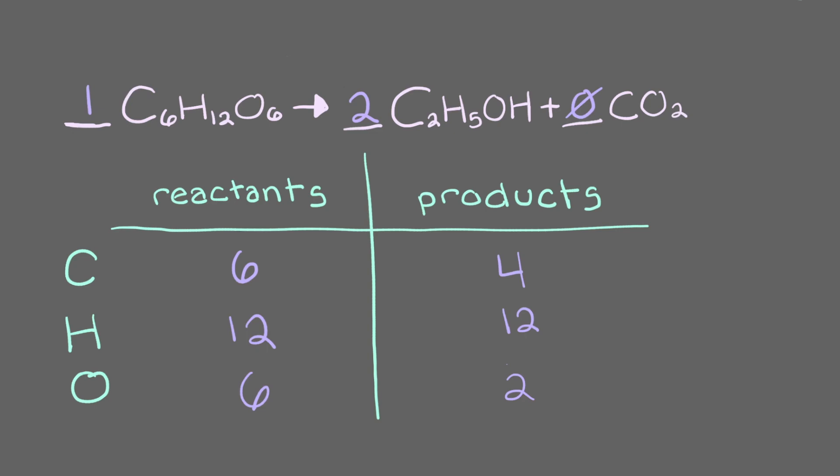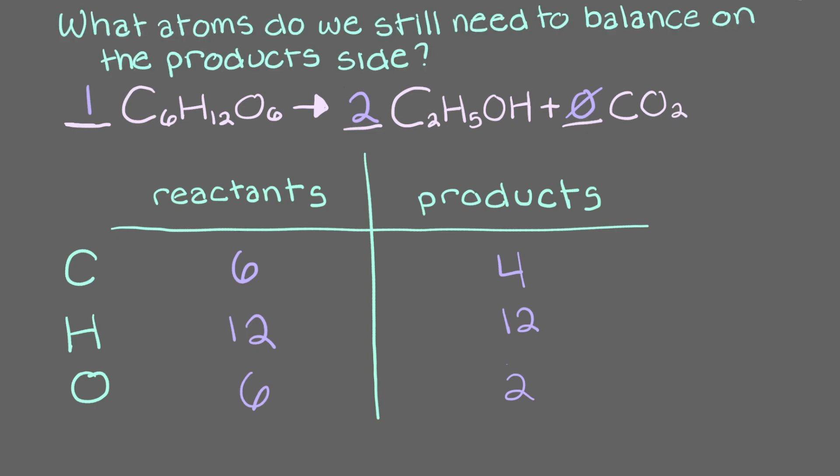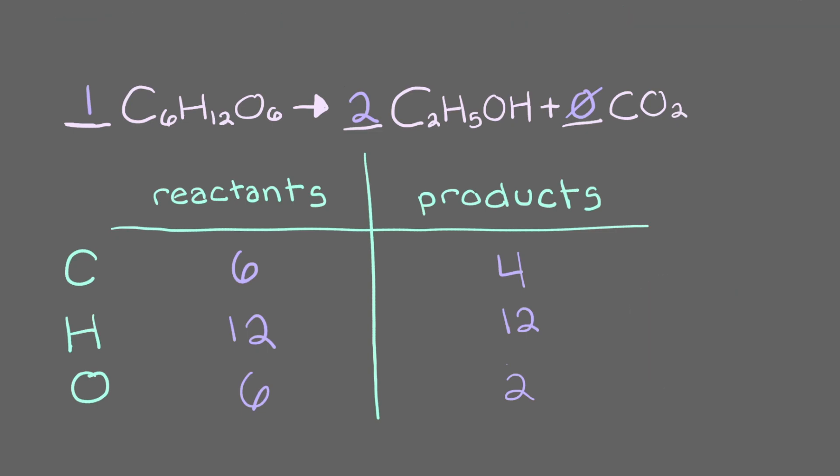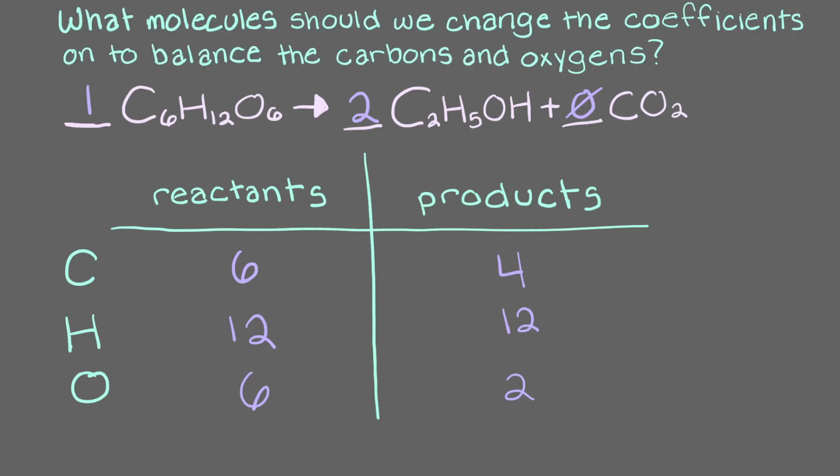Okay, we're part of the way there. We have 12 hydrogens on each side of the equation. Now, what atoms do we still need to balance on the product side? Nice choice! Looking at our table, we still need our number of oxygen and carbon atoms on the product side to match the number of oxygen and carbon atoms on the reactant side. So, what molecule should we change the coefficients on to balance the carbons and oxygens?